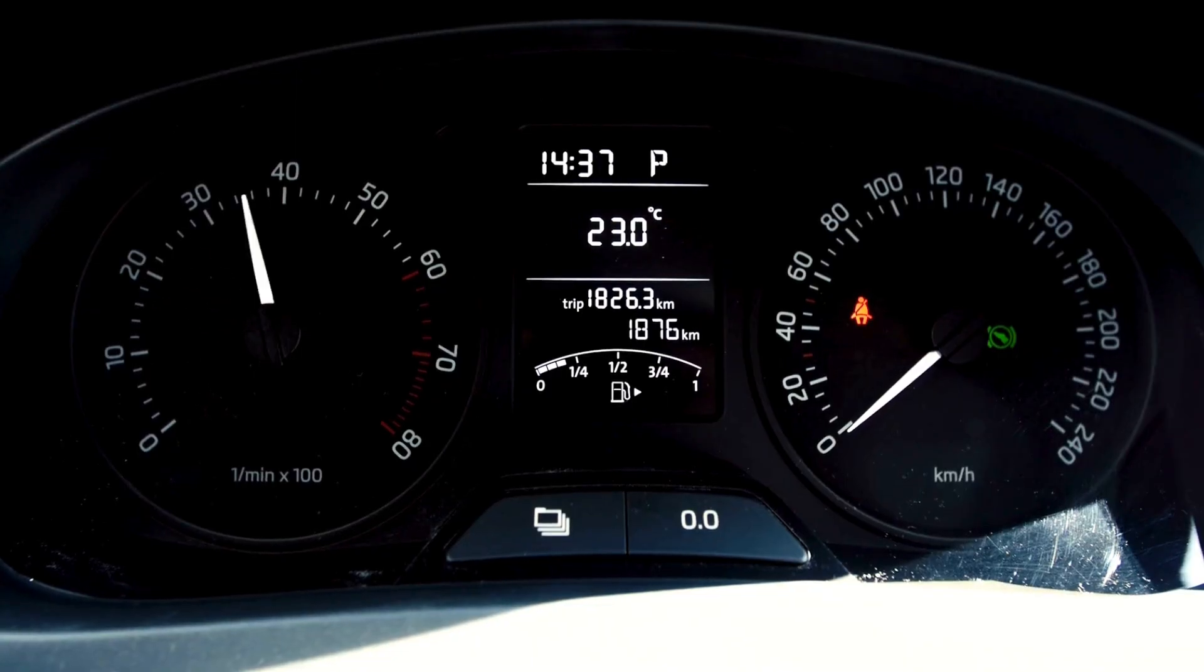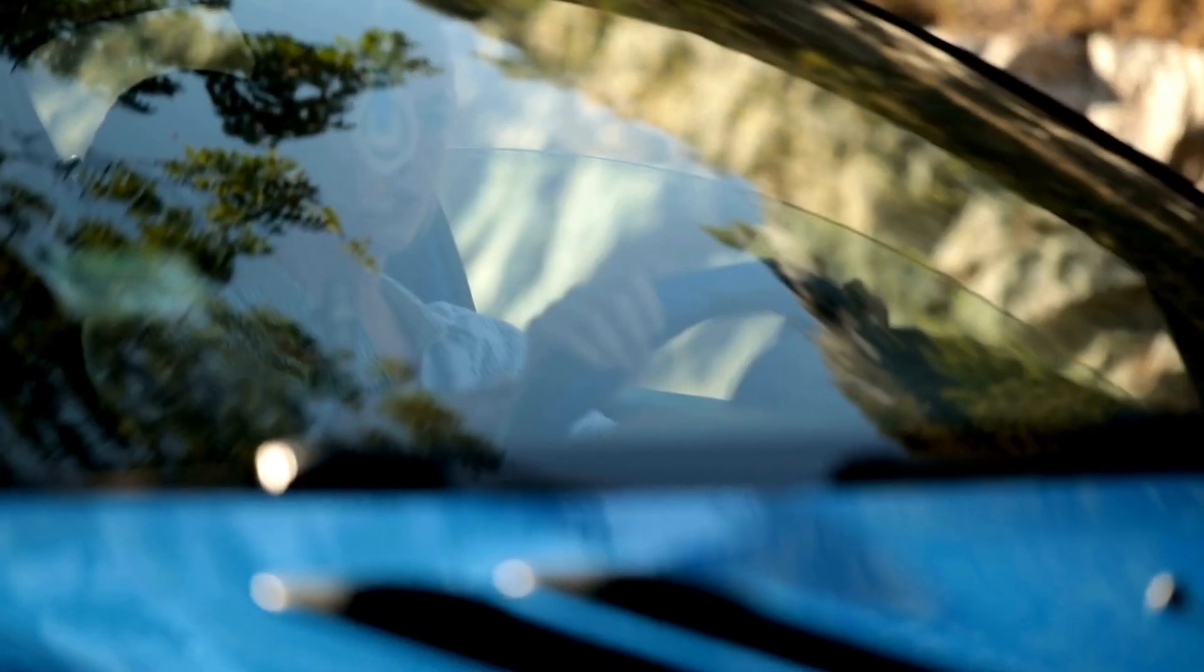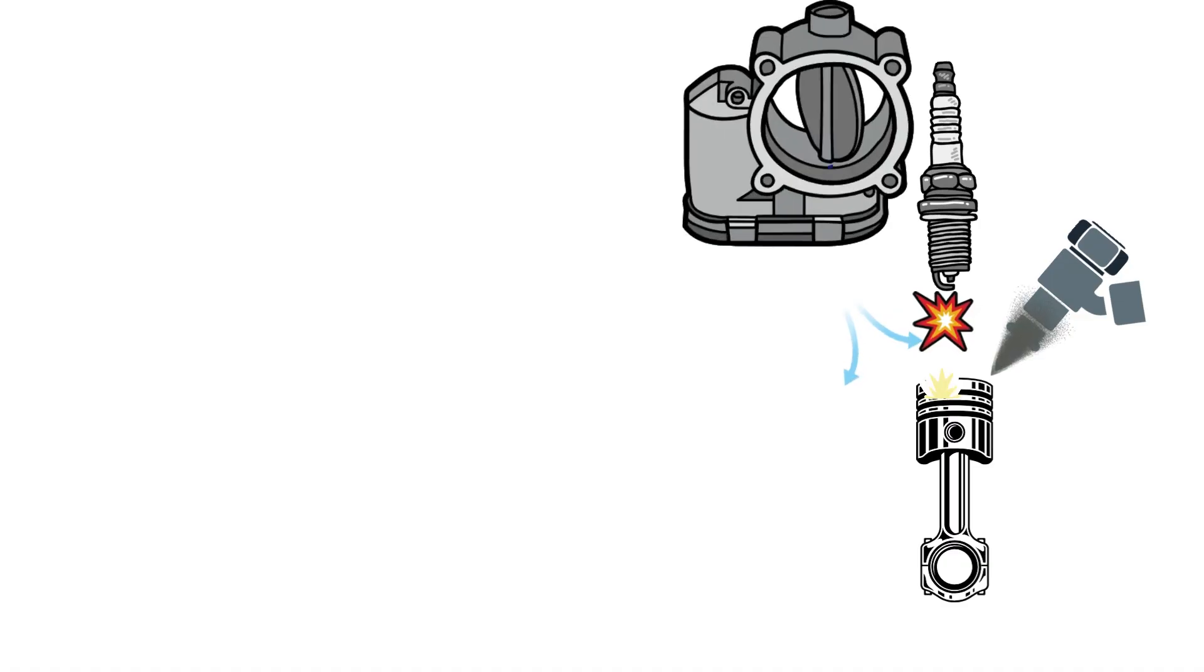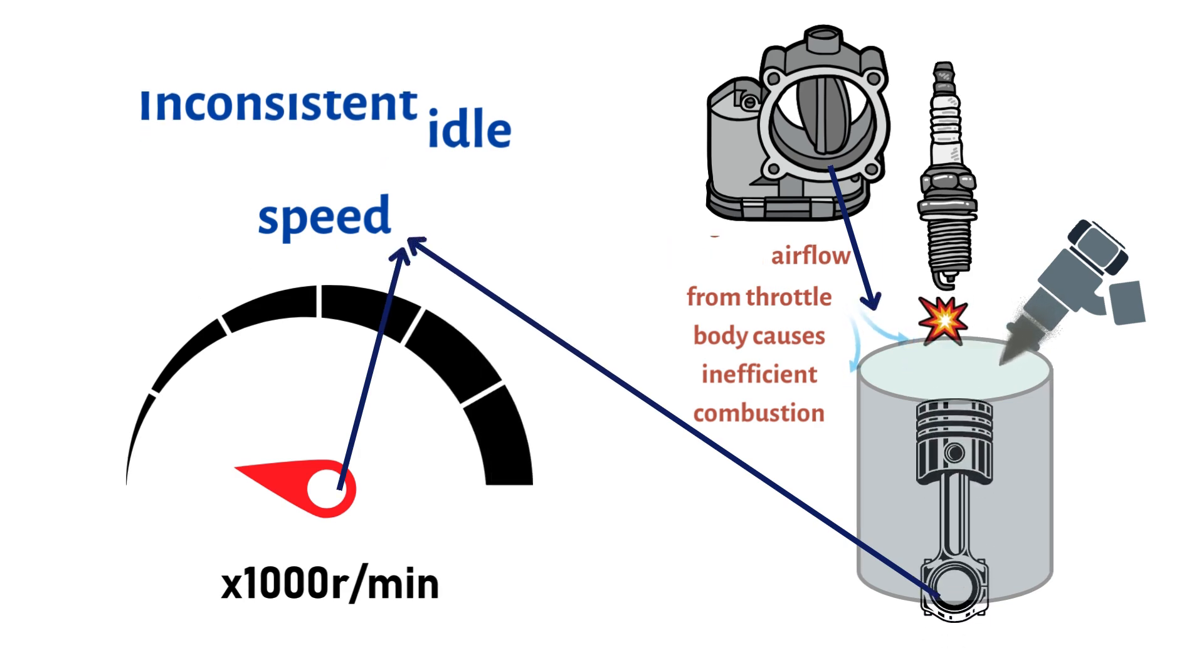You'll notice RPMs that rise and fall inconsistently, a persistent rough idle, or the engine stalling out completely when coming to stops. This up and down idle indicates the throttle body can no longer properly regulate a steady airflow into the engine.